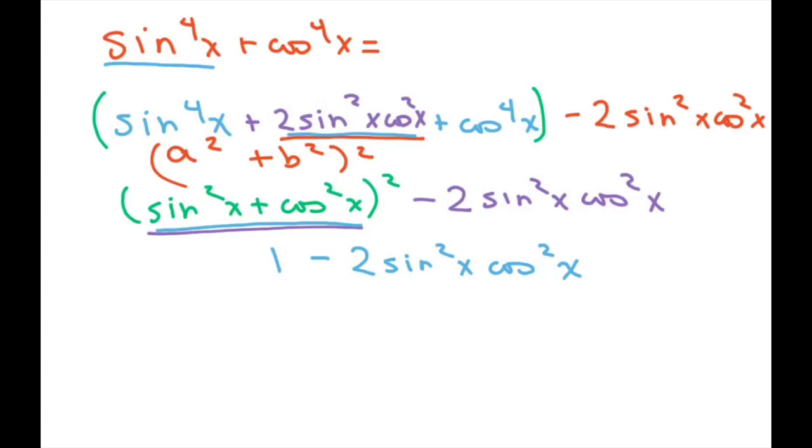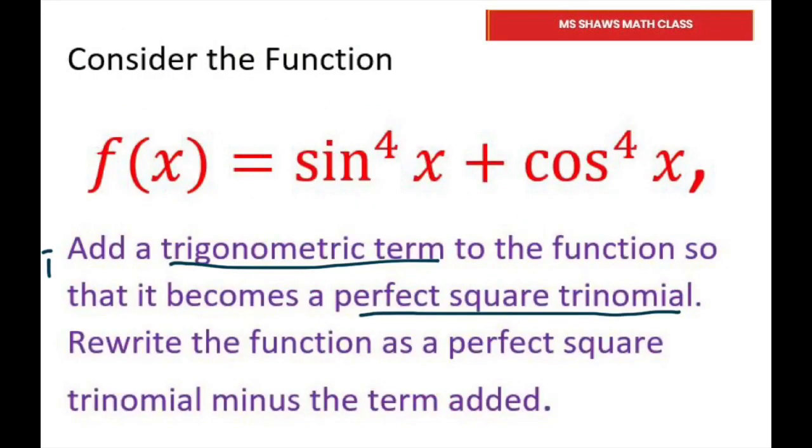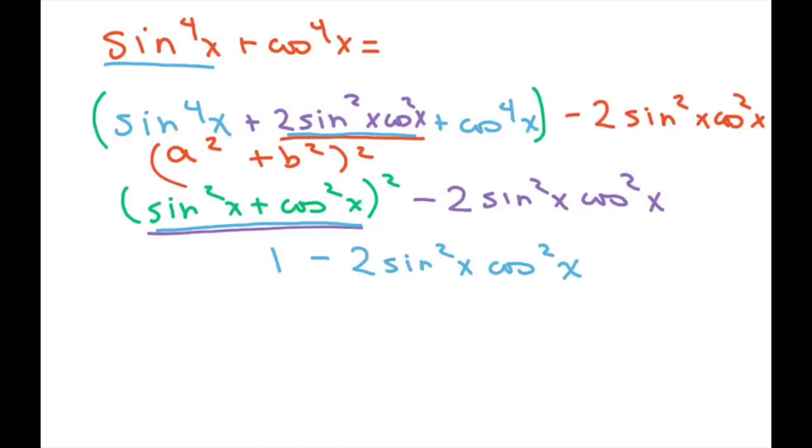Alright, and now they want you to subtract it. So let's go back. They want you to rewrite the function as a perfect square trinomial minus the term added. So we added this term here. So we're going to do that minus the term added. So here we go. We have one minus two sine squared of x cosine squared of x. And you're going to do one minus this. So that's going to be two. And we have two two sines and two cosines.